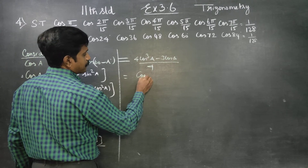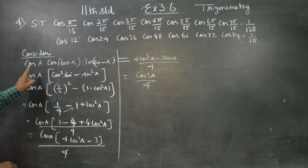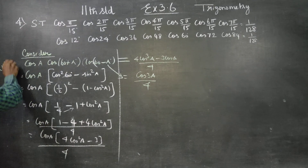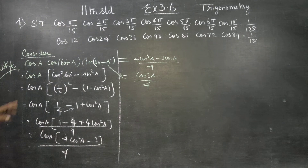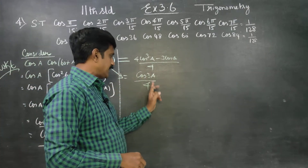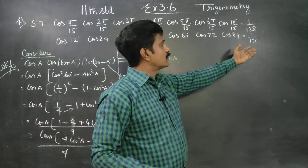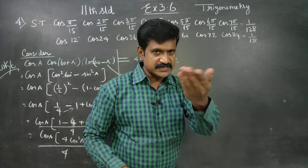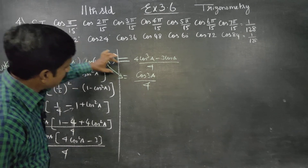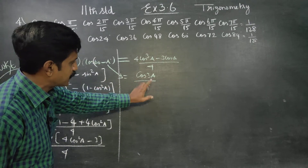Then finally, the answer is cos(a)·(4cos²a − 3) by 4, which is the cos multiple angle — triple angle formula: cos(3A). So cos(a)·cos(60° − a)·cos(60° + a) = cos(3A)/4. If you want to use the standard IIT formula, this is the ready-made formula: cos(a)·cos(60° + a)·cos(60° − a) = cos(3a)/4.